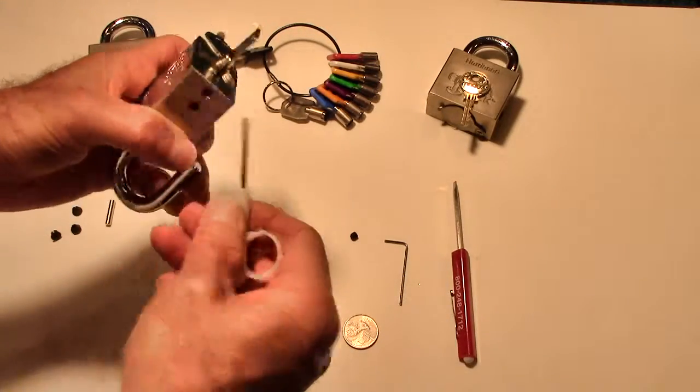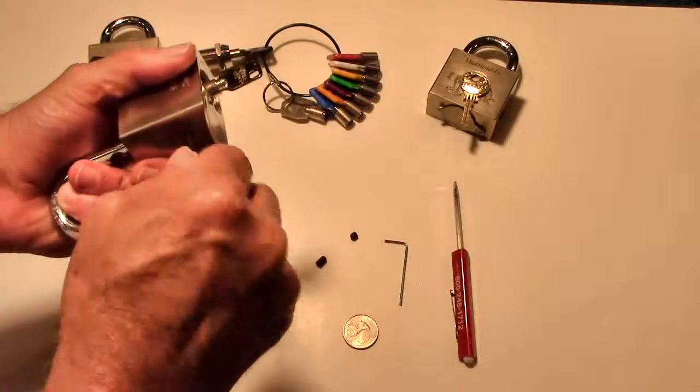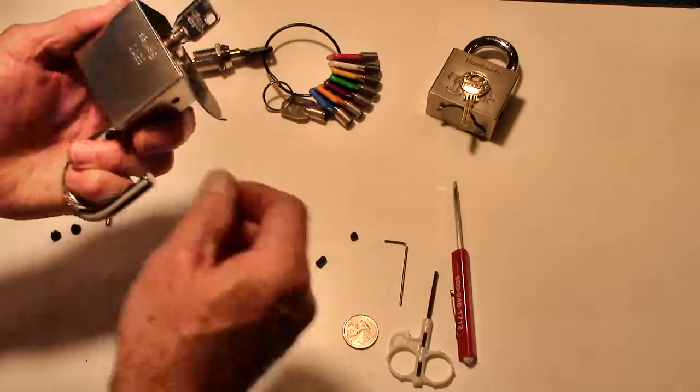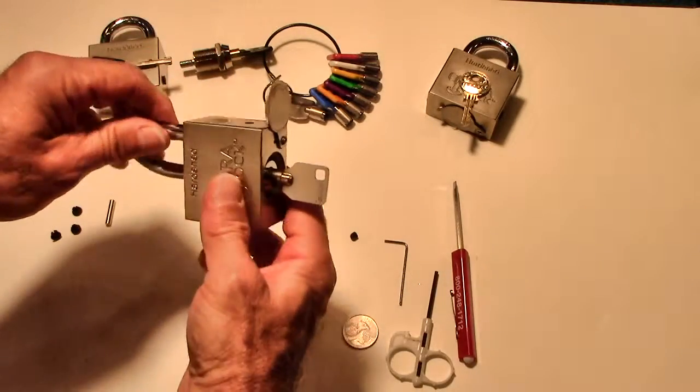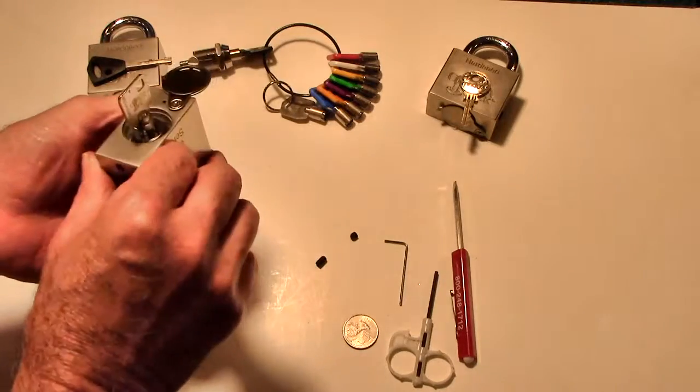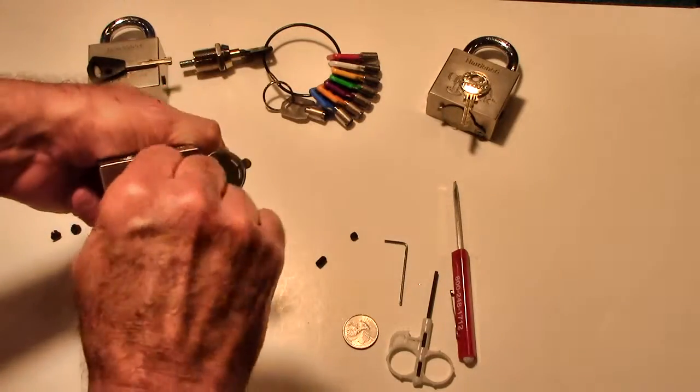Then you go ahead and tighten down on the Allen screws that hold that lock cylinder in. The Allen screws are designed to hold the lock cylinder on the two flats of the lock cylinder.